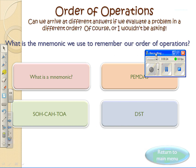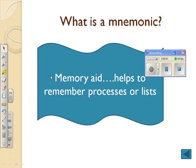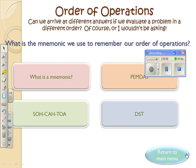So, can we arrive at different answers if we evaluate a problem in a different order? Yeah. Now, the question is, what's the mnemonic that we use to remember our order of operations? What's a mnemonic? Turns out it's a memory aid. A mnemonic means it's something that helps to remember processes or lists. So, let's try this again.